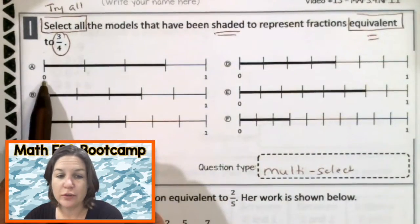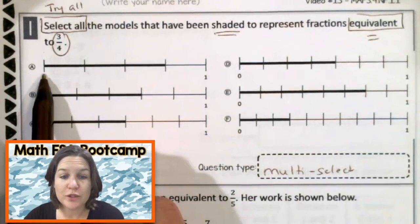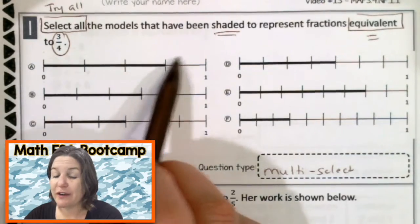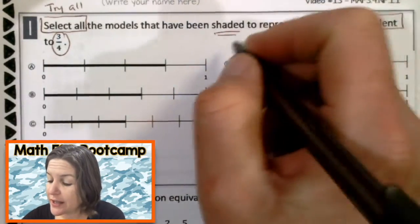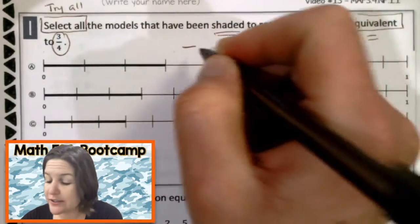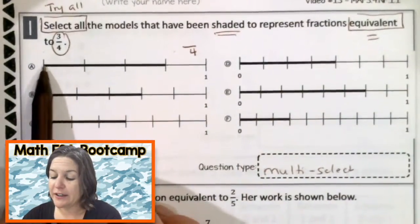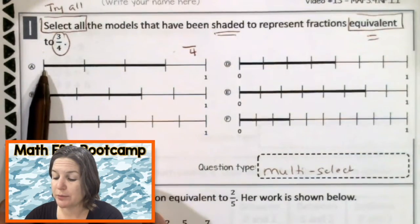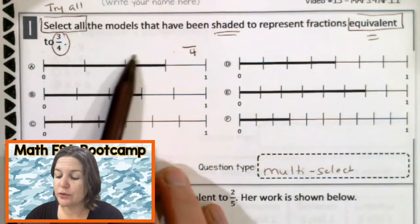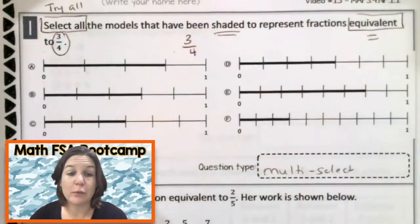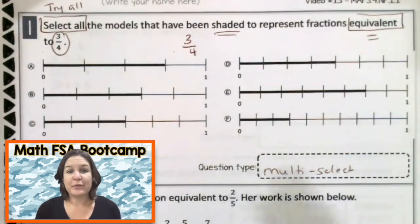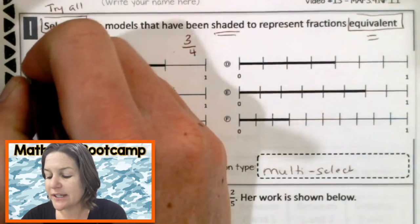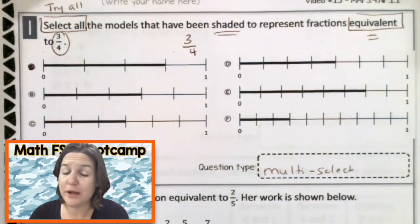So let's start with A, and let's go ahead and identify the fraction. Starting at the zero, let's count the total number of equal parts or jumps in this case. We have one, two, three, four equal parts. That means that for this one, our denominator is four, and the amount shaded in represents the numerator. So let's count the numerator jumps. One, two, three. So this number line represents three-fourths, and three-fourths is equivalent to three-fourths. So let's mark A, but we're not done. This is a multi-select, meaning there could be more than one possible answer.